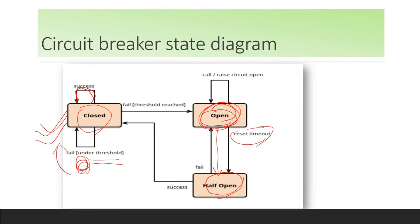Open means every request is returned from the circuit breaker itself — it is not going to the service at all. Half open means if there are 10 requests per second, it makes one request per second to check whether the service is up or not. Based on that, it resets the circuit to open or closed. If it is successful, it closes the circuit again and every request passes through to the service.